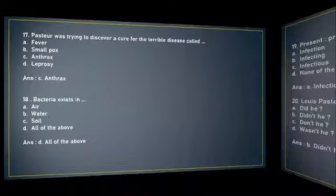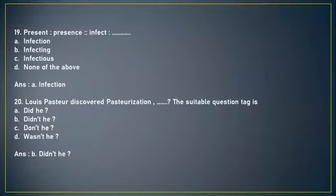Next: Present is to presence as infect is to what? You have to see the first pair of the question and complete the second pair in a similar manner. So present is to presence as infect is to: (A) infection, (B) infecting, (C) infectious, or (D) none of the above. The answer is A, infection.